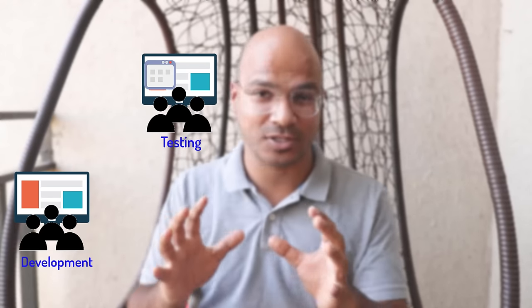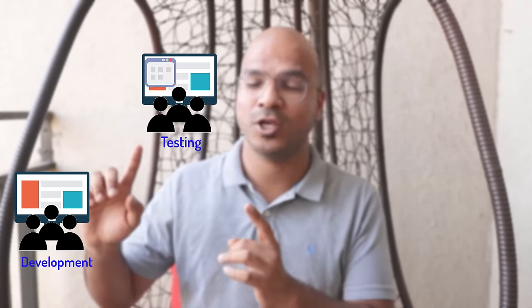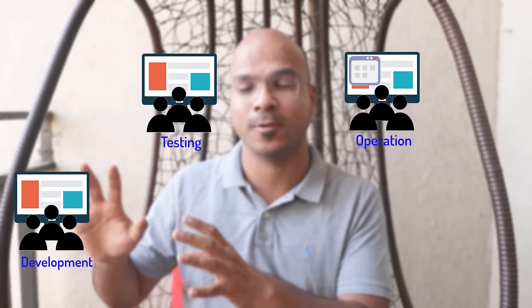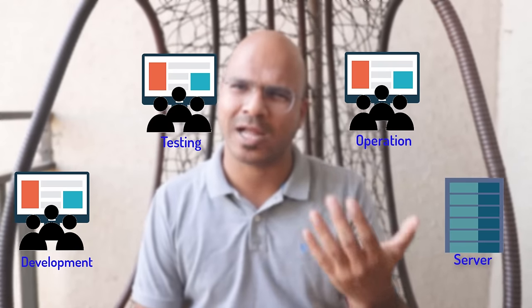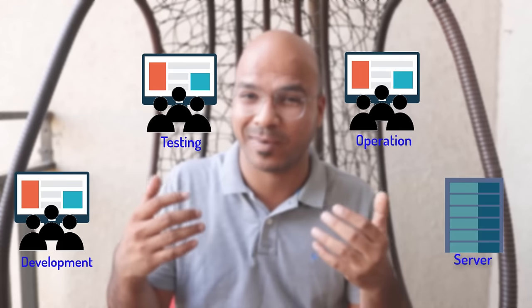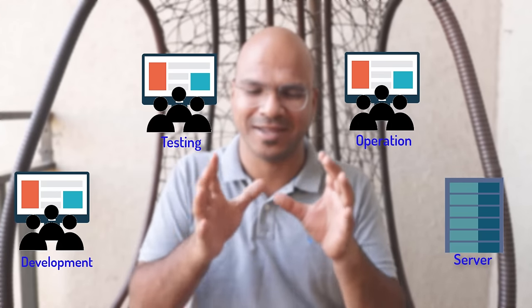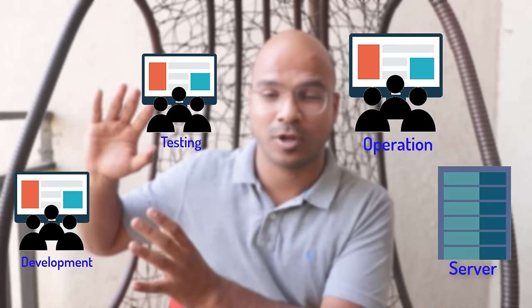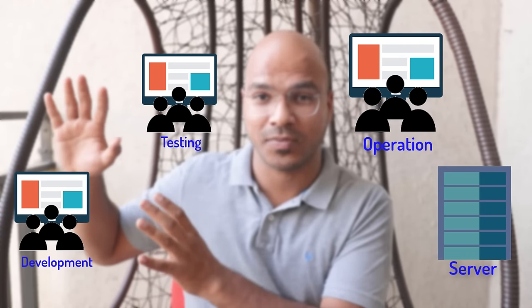The testing team will do testing on it. And then after that, if everything is going good, it goes to the operations team so they can deploy the application on the production server. Depending on the company, this process might change. But we have three steps: develop the application, test the application, and ship it to the production server so we can run it there.